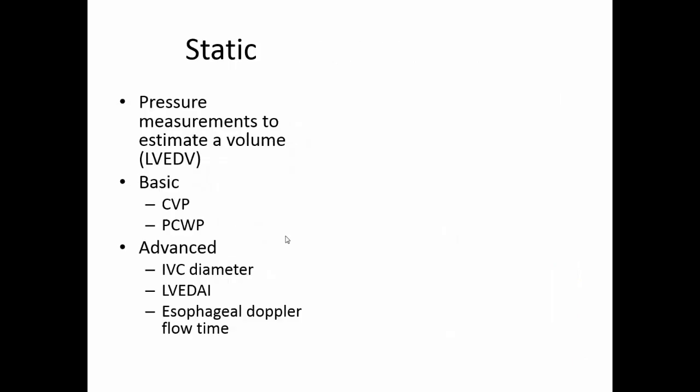Static variables like CVP and wedge are single-point-in-time measurements — you just say the CVP was 4. IVC diameter on ultrasound is also a static variable, as are LV end-diastolic area index and esophageal Doppler flow time. It's important to note that IVC ultrasound and esophageal Doppler are tools used to estimate volume responsiveness, but those tools produce a number that can be either static or dynamic depending on how you use them.